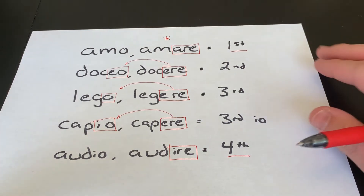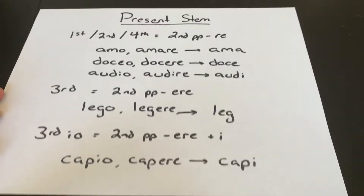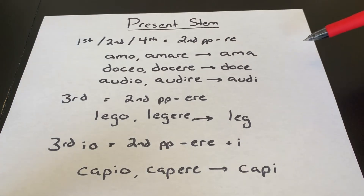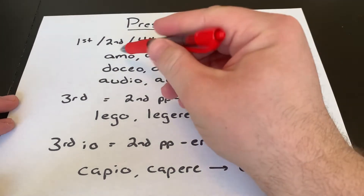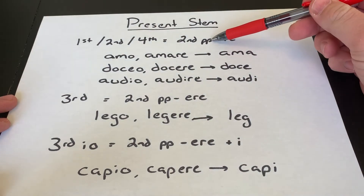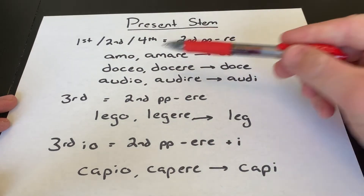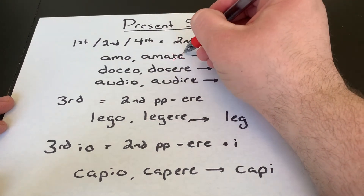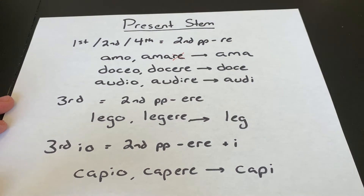Now let's talk about how you form the stems. There are two stems we're going to be using. The first is the present stem. To form the present stem, you first need to identify the conjugation because that makes a difference. For first, second, and fourth conjugation verbs, you take the second principal part and remove the RE. So for amo, amare — that ARE tells us it's first conjugation — to form the present stem, we take off the RE, and that gives us ama as the present stem.